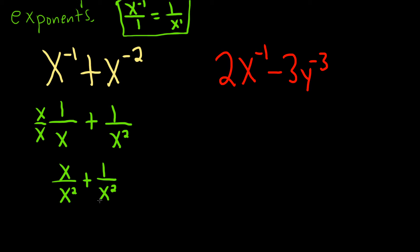Okay, so now everything is over x squared, so we can perform the addition. This is x plus 1, all being divided by x squared. And that would be the final answer.